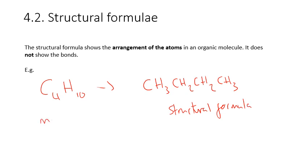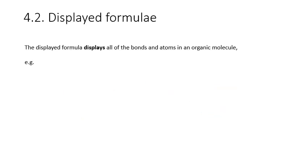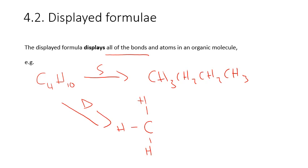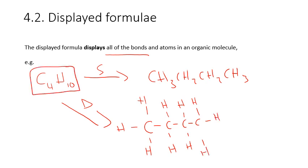We've converted from a molecular formula to a structural formula, and we could then convert to any other type. The displayed formula displays all of the bonds in the molecule. For the same example, C4H10, the structural formula was CH3, CH2, CH2, CH3. The displayed formula draws all of the bonds, showing each hydrogen explicitly bonded to the carbon chain. We can see how we've gone from molecular formula — showing number of atoms — to structural formula, showing structure but not bonds, to displayed formula, showing the structure and all bonds.